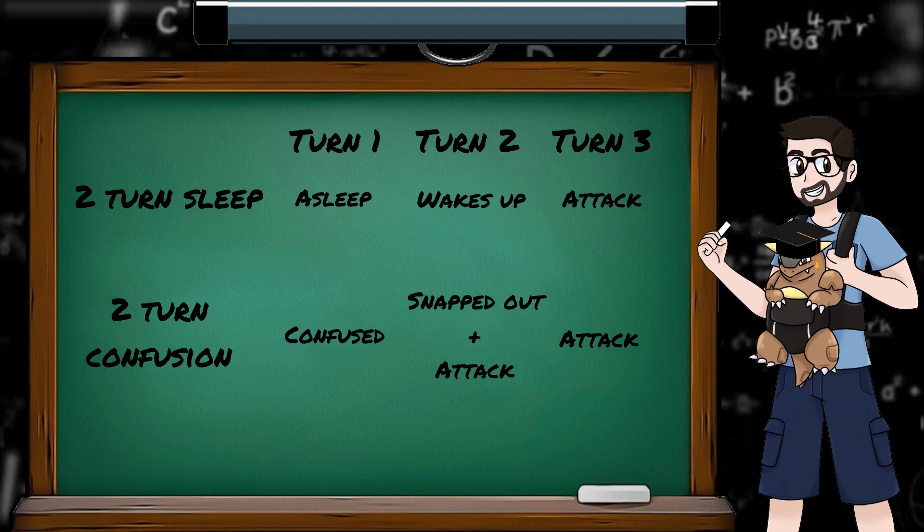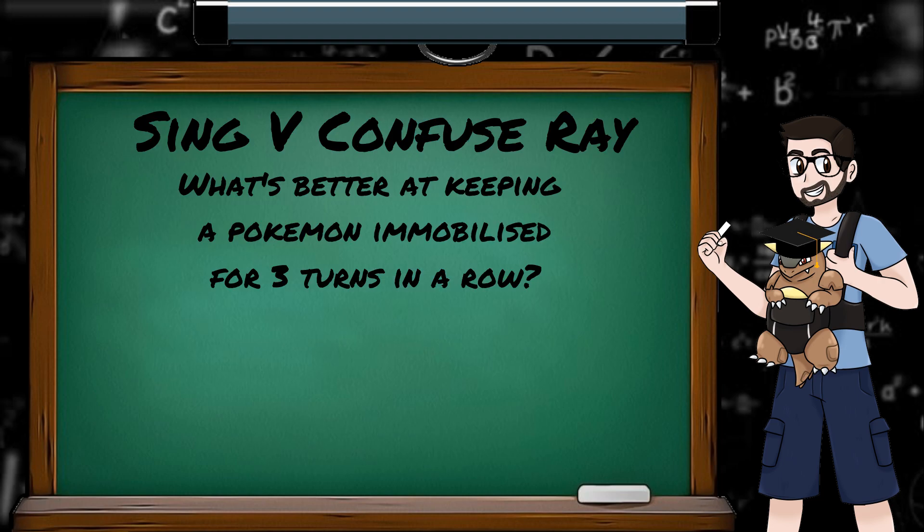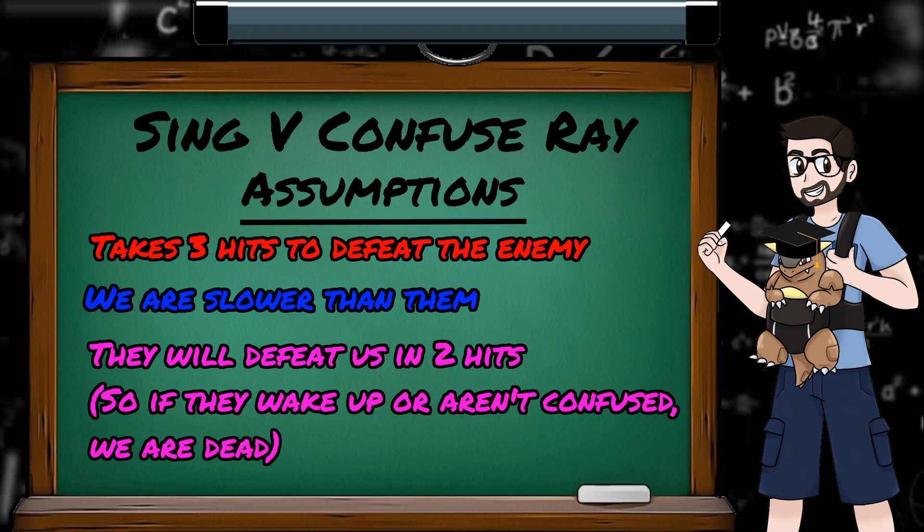Now we have the basics down, let's get into some probabilities. The question that inspired this episode was from my mate Teo at RBY Pokemon Challenges. He was doing a 0 DVs, no TMs, Lapras solo run, and was wondering what's more likely to keep a Pokemon inactive for 3 turns. His choices were Sing or Confuse Ray, so let's check them out. To make our lives easier, let's make some assumptions. We're going to assume that we're slower than the enemy, we can survive 2 hits from them, and it'll take 3 hits from us to knock them out. So they need to be immobilised for 3 turns as we get our attacks in, after we've put them to sleep or Confuse them.